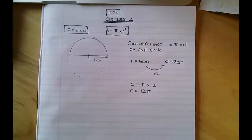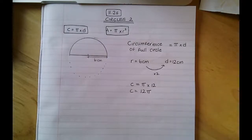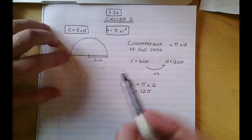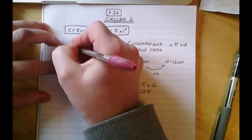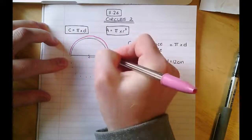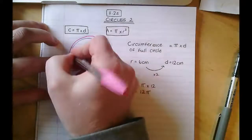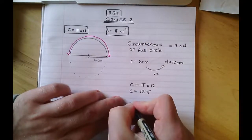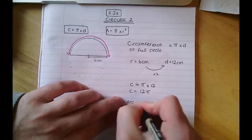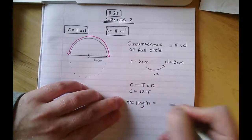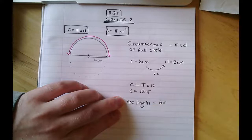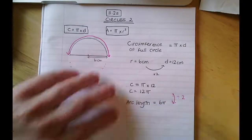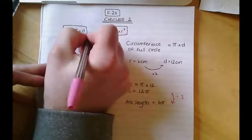I'm purposely going to leave it as 12 pi for now rather than writing it as a decimal. The reason for this is that if I rounded now, I may lose accuracy marks towards the end. Since the whole circumference is 12 pi, what's called the arc length — this curved part — is 12 pi divided by 2, which is 6 pi.